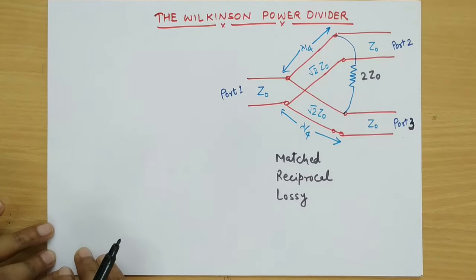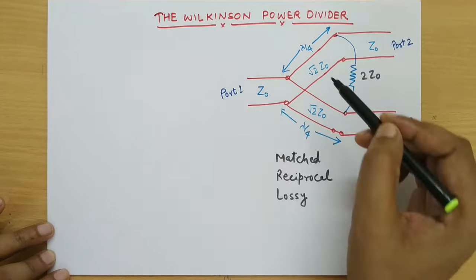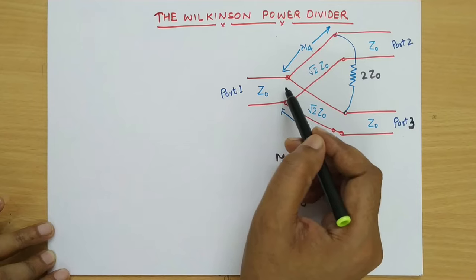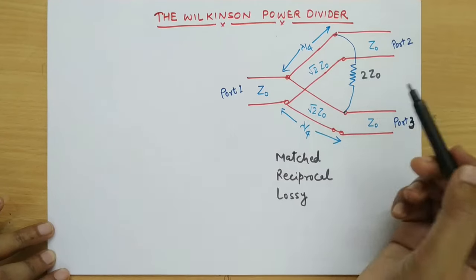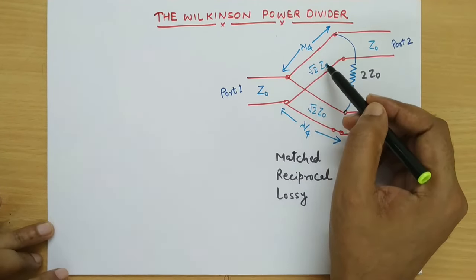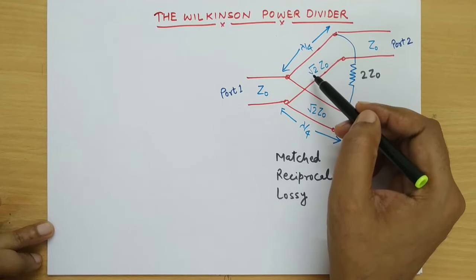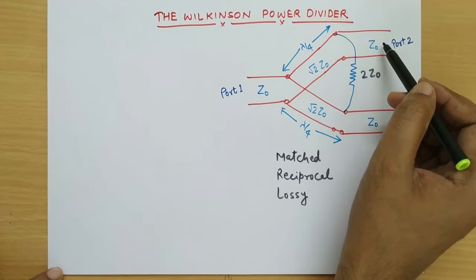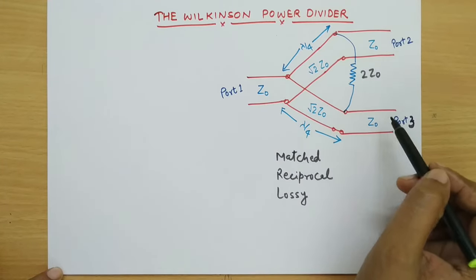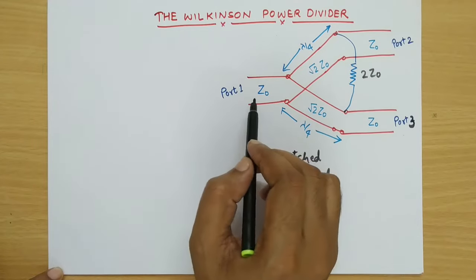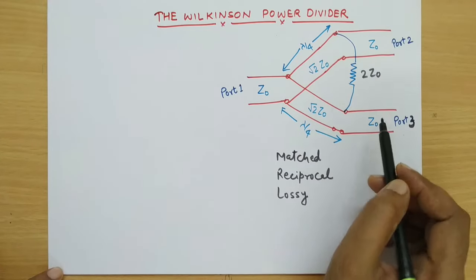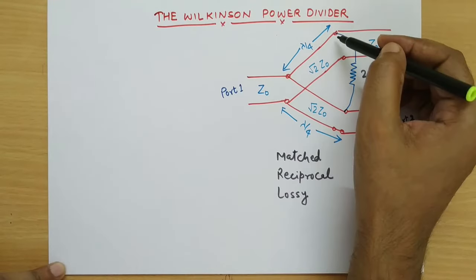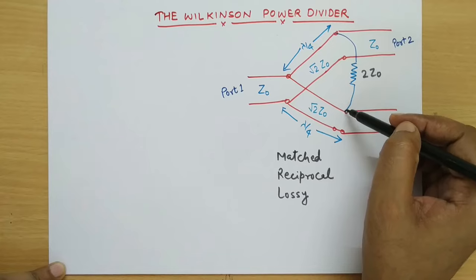The construction of the Wilkinson power divider consists of two lambda by 4 sections dividing from the input port. The characteristic impedance of these lambda by 4 sections is root 2 Z0. All the input port transmission lines for port 1, port 2 and port 3 will be Z0, and a 2Z0 resistor is connected between port 2 and port 3.